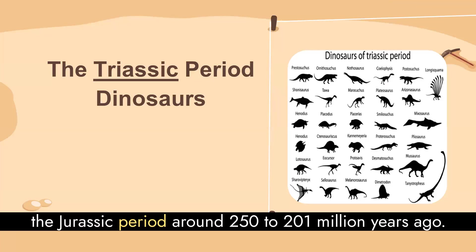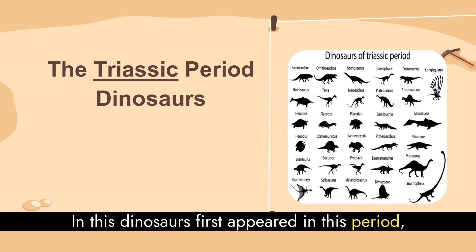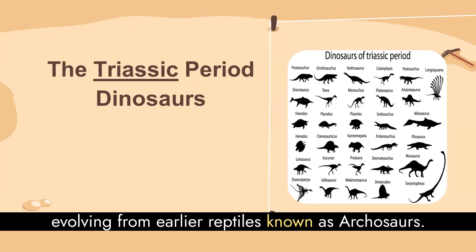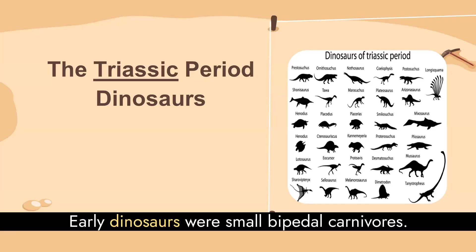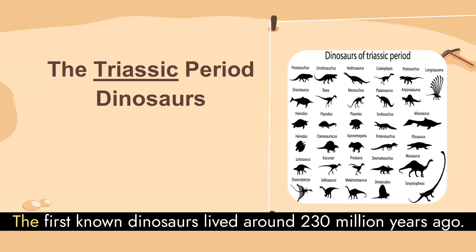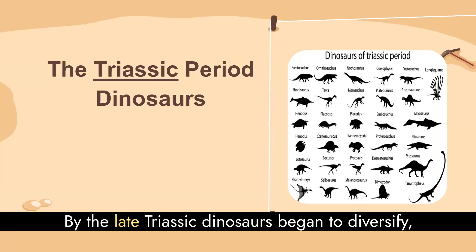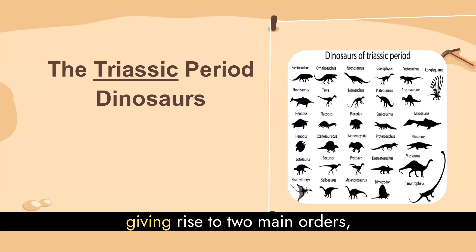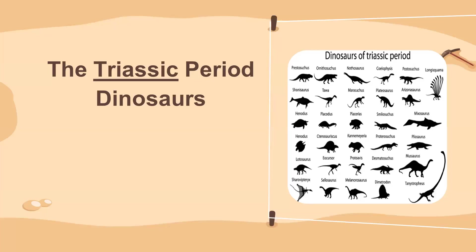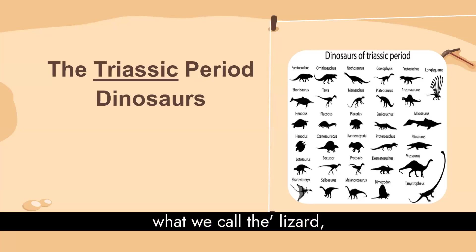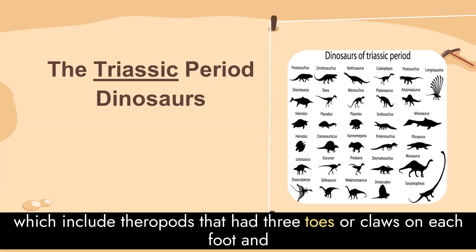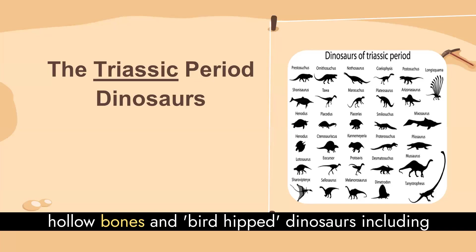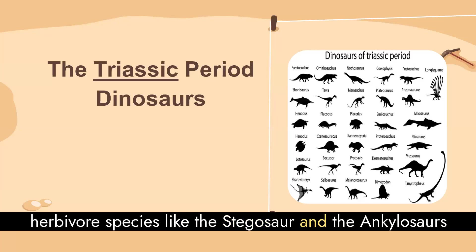The Triassic period ran from around 250 to 201 million years ago. Dinosaurs first appeared in this period, evolving from earlier reptiles known as archosaurs. Early dinosaurs were small, bipedal carnivores. The first known dinosaurs lived around 230 million years ago. By the late Triassic, dinosaurs began to diversify, giving rise to two main orders: the lizard-hipped dinosaurs, which include theropods that had three toes or claws on each foot and hollow bones, and the bird-hipped dinosaurs, including herbivore species like the stegosaurs and the ankylosaurs.